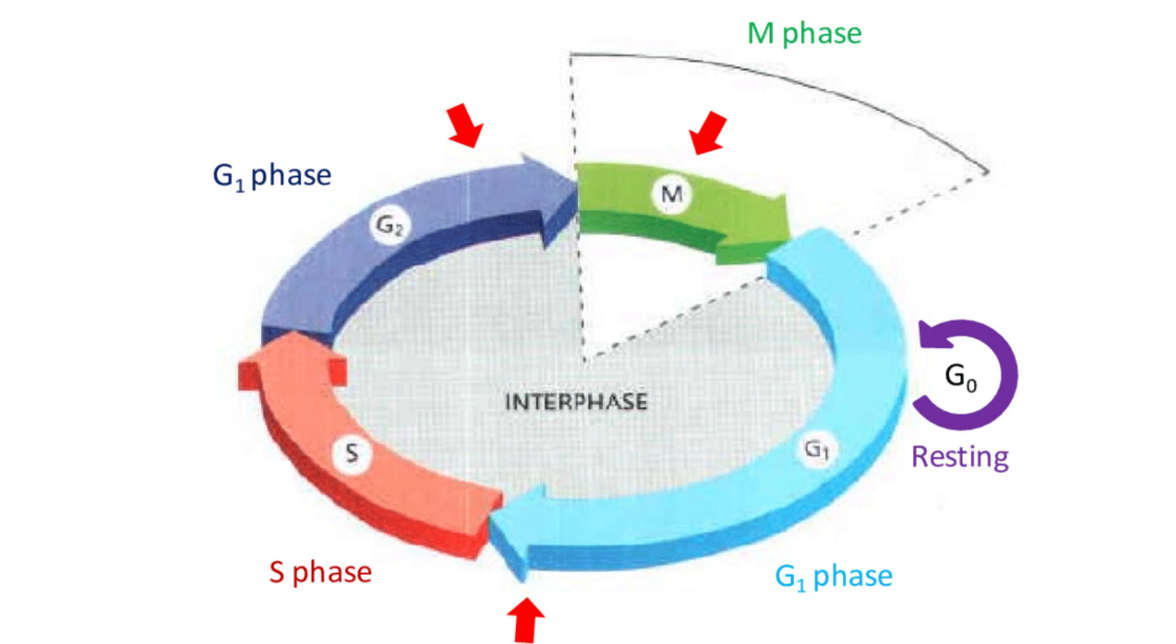the cell is accumulating nutrients and growing. Interphase can be broken up into three different phases: G1, S, and G2. The other fourth phase, which is not included in interphase, is called the M phase, which consists of mitosis and cytokinesis. We will discuss what these terms are later in this video.